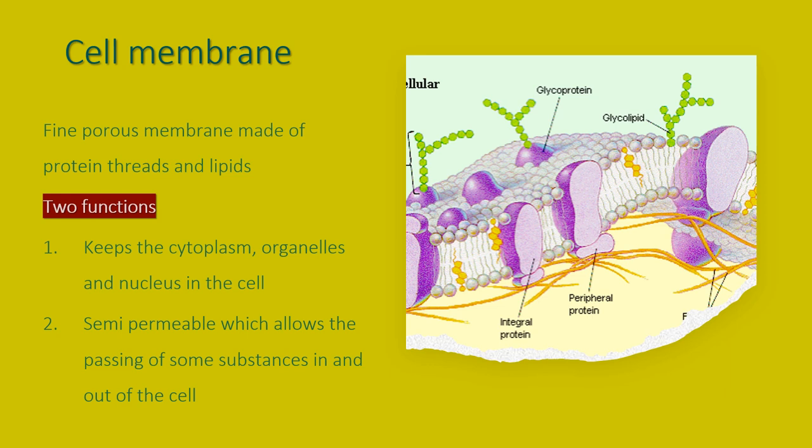The cell membrane is the wall of the cell and its function is to keep everything inside. To stop the cytoplasm from running out of the cell and to keep the organelles which float in the cytoplasm and the nucleus within the cell.